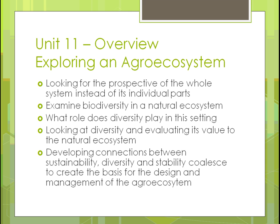For a quick overview of this unit, we're going to look at some perspectives from the whole system instead of individual parts. Instead of just looking at the soil, the type of animals, or the type of crops, we'll look at the whole thing and how we make it all work together. We'll examine what diversity might be needed for a natural ecosystem as opposed to monocropping, what role diversity plays, and how to develop connections between sustainable diversity and stability to create one unit that works together without interference from humans.